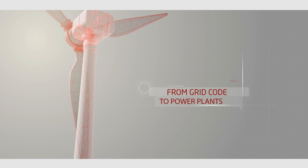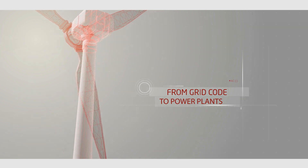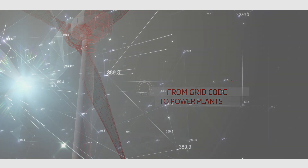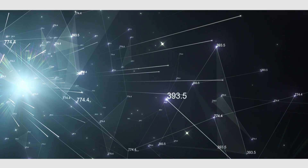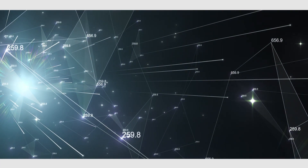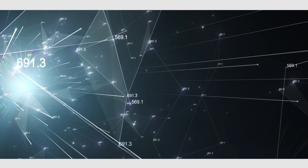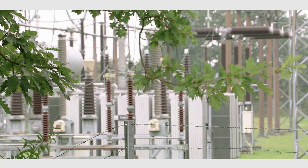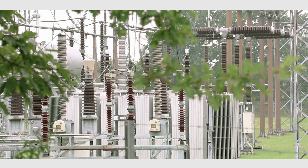Grid codes are the technical specifications which define the parameters needed so that power plants can satisfy these conditions.